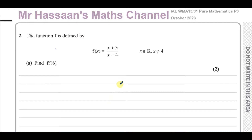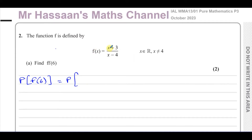Part a says find f(f(6)). That means we first find f(6) and then put that result inside the function f again. So what is f(6)? We replace the x in this function with 6: we have (6+3)/(6-4), which gives us 9/2.